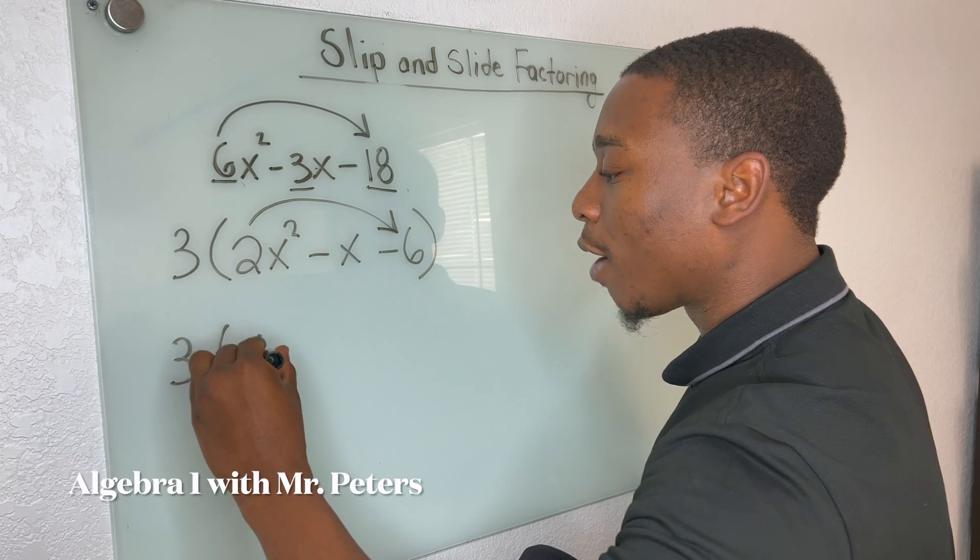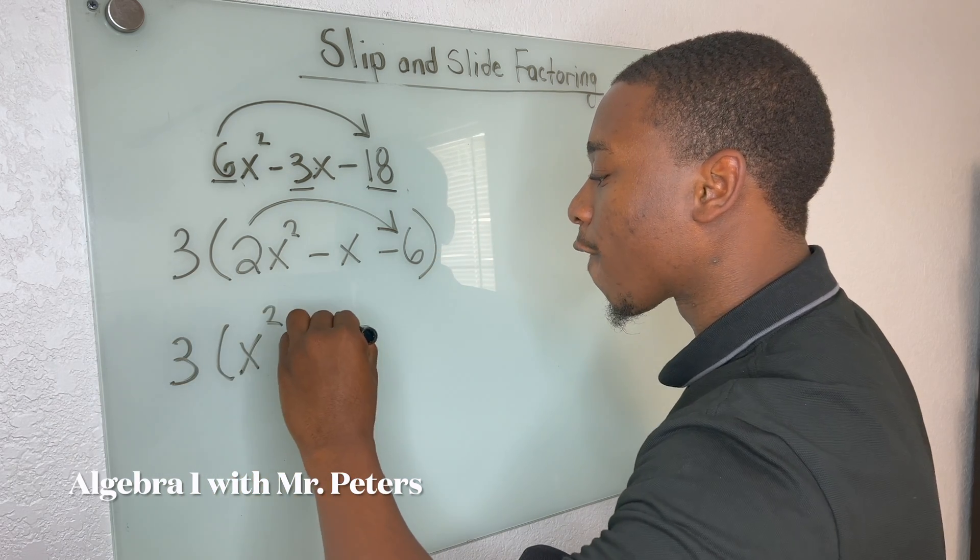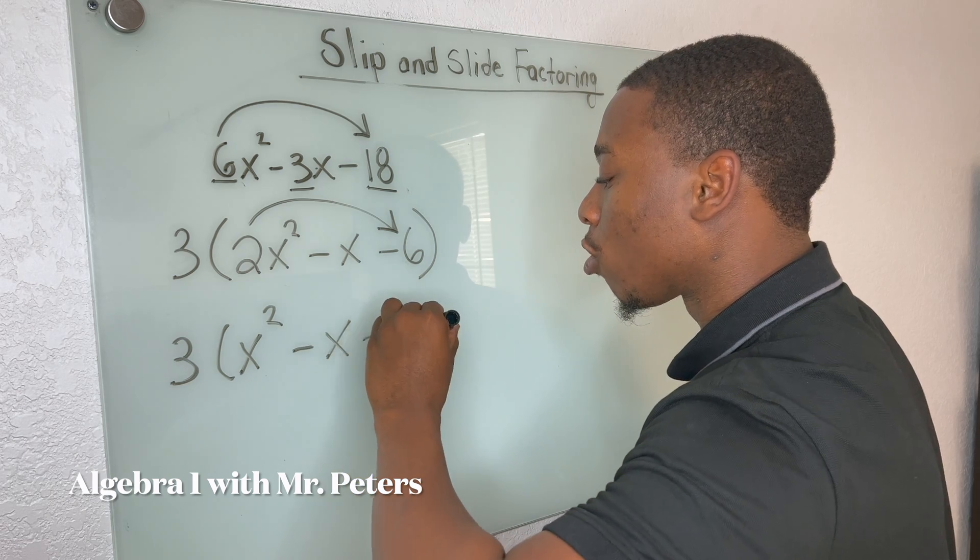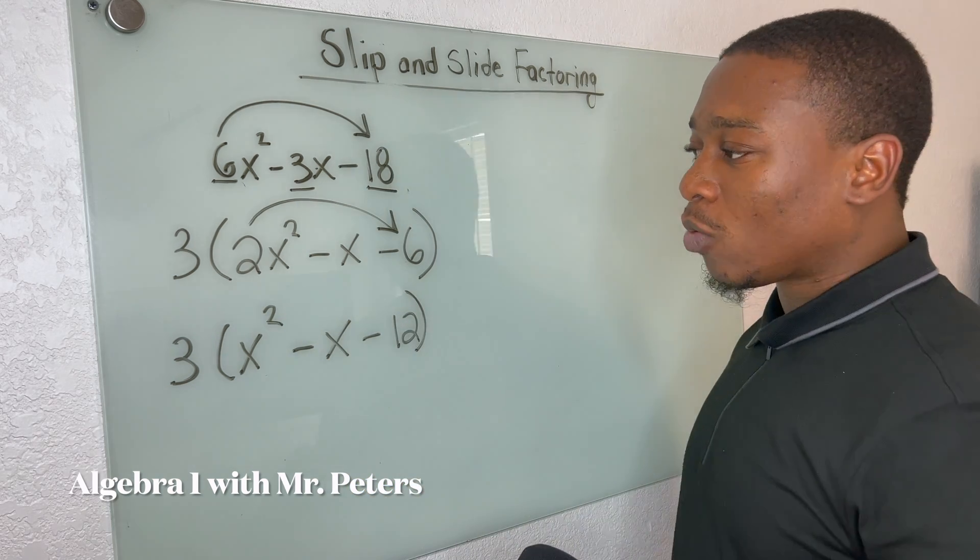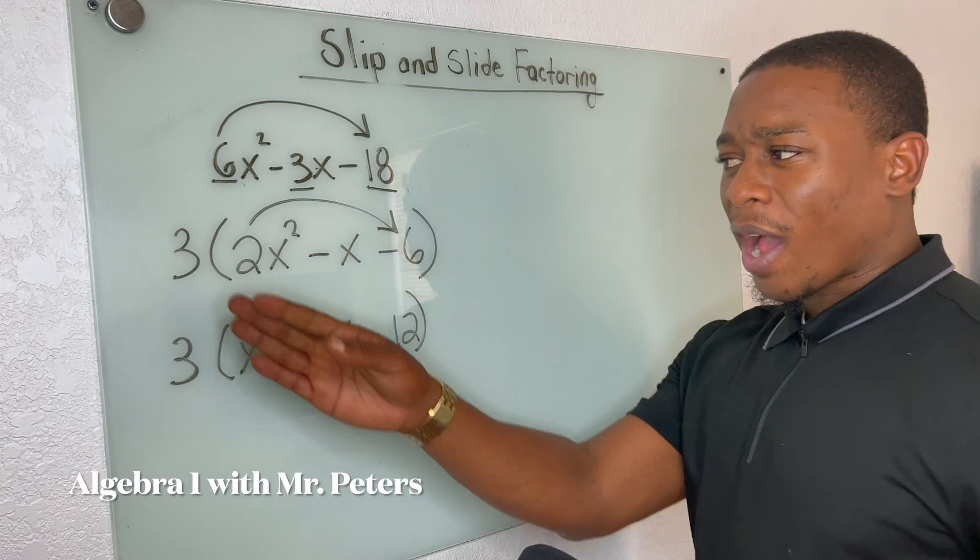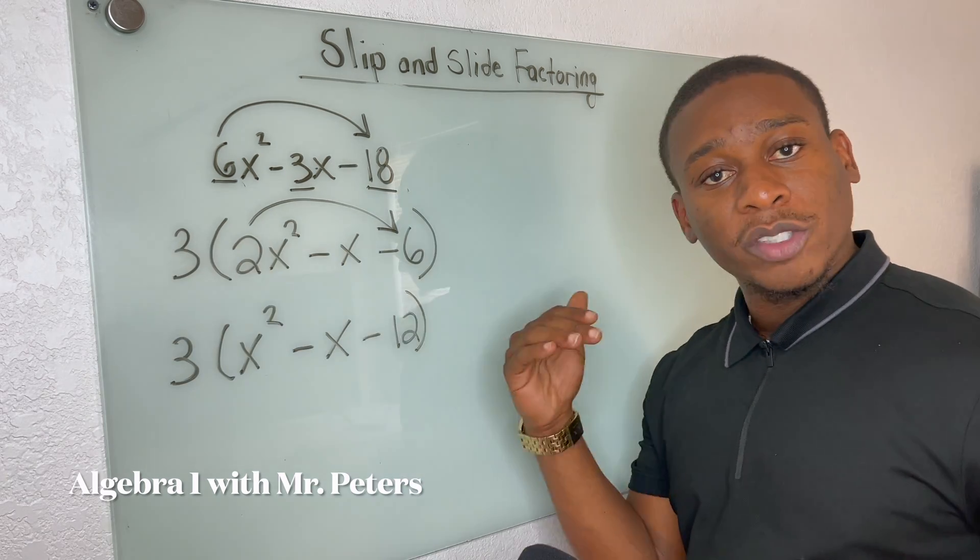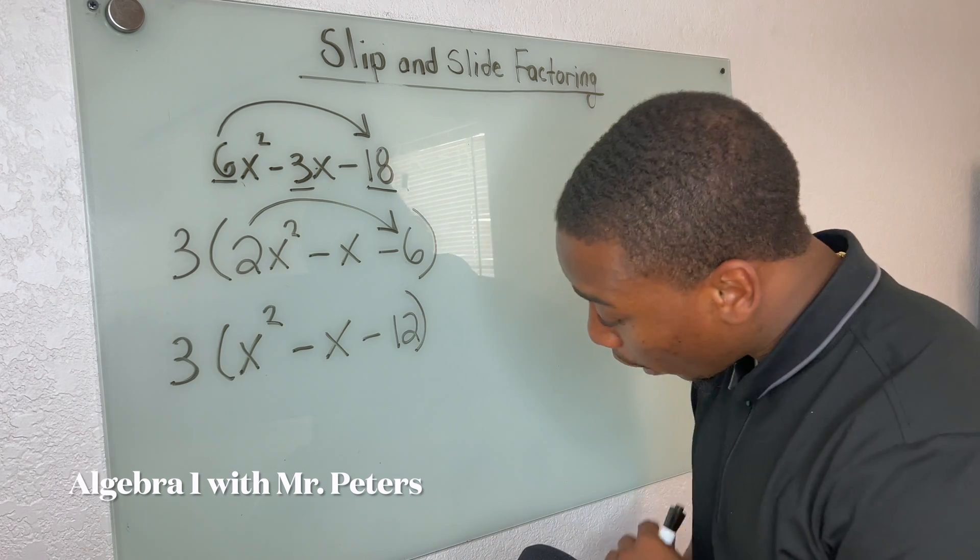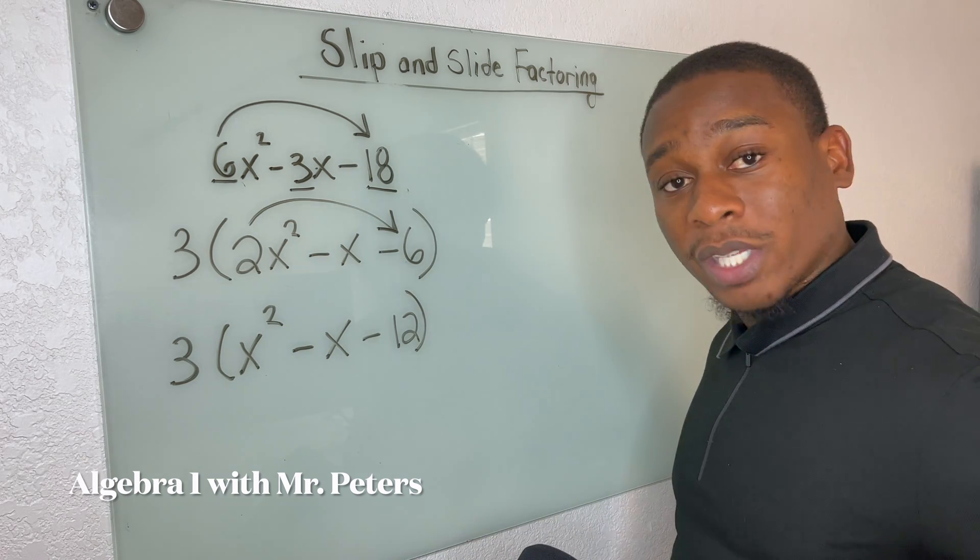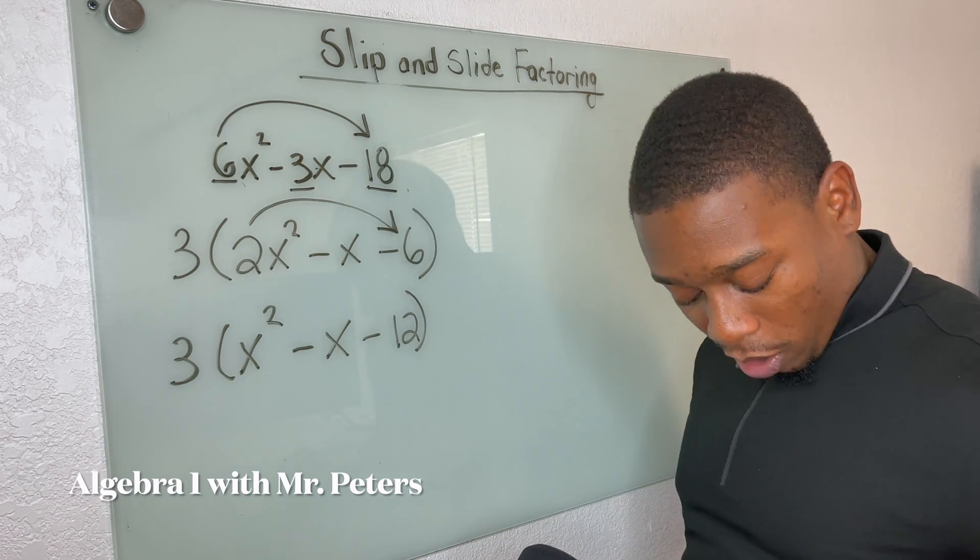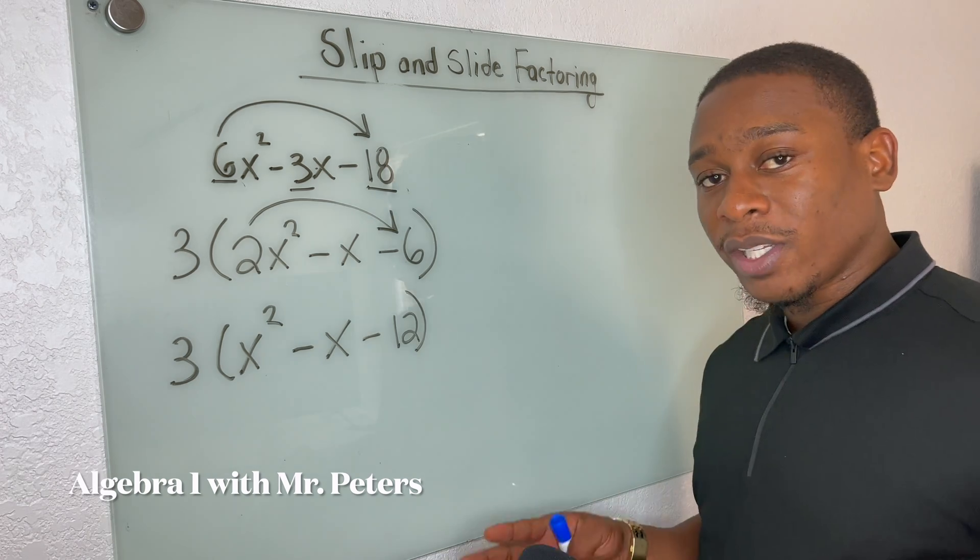So what we need to do now is actually do the multiplication. And once we multiply A and C, we are going to have this what you see. And if anybody's wondering why is the three out there, just remember that is our greatest common factor. It's not going to go anywhere. It's going to stay there the whole time. Now, at this step, we have successfully did the slip.